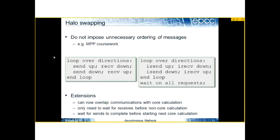Consider a typical halo-swapping code in 2D. One important thing is not to impose ordering on communications. The easiest way to write halo swapping is: send up, receive down, send down, receive up, then send left, receive right, send right, receive left. That approach imposes an ordering — you wait for the up/down swaps to complete before starting left/right. The problem is that a neighbor to your left might be ready to communicate with you while you're waiting on the up direction.